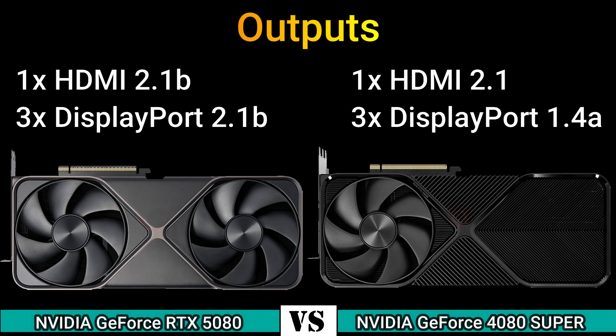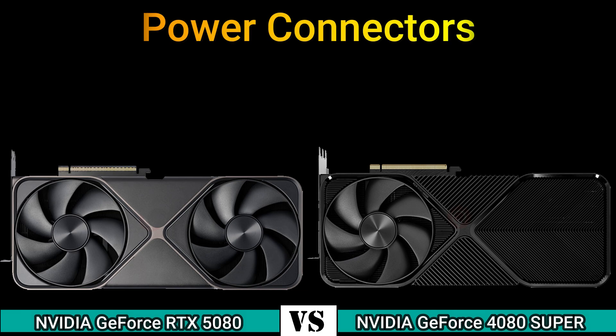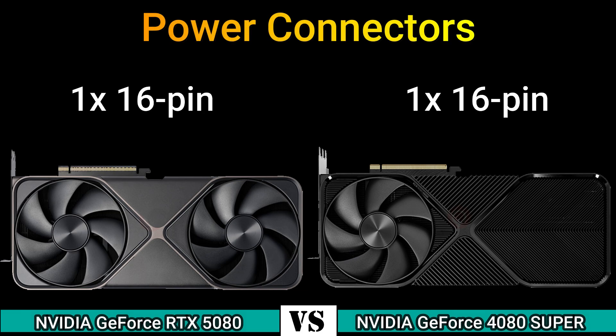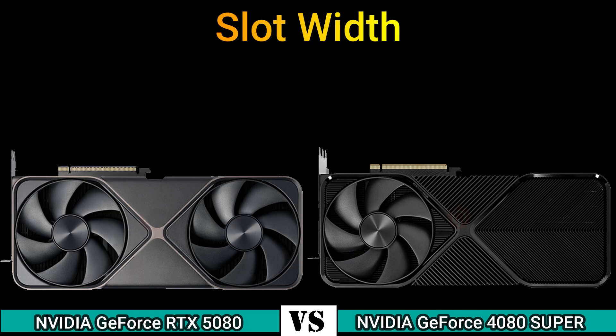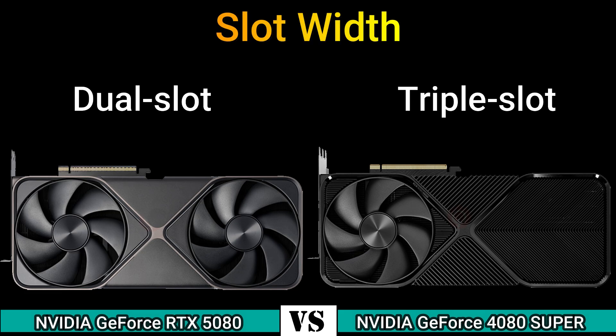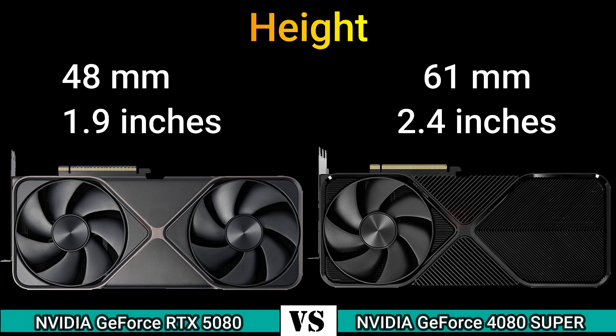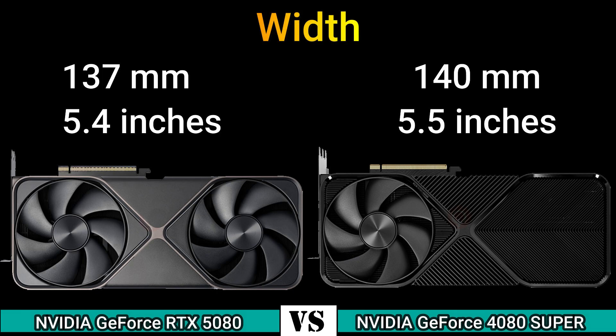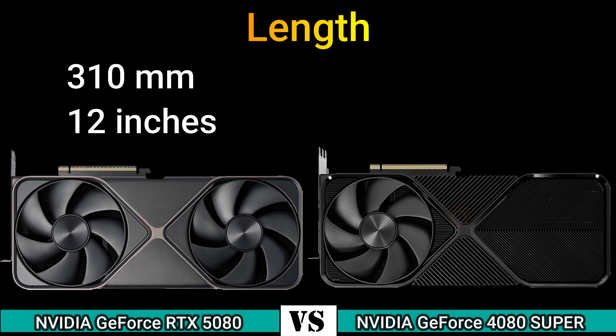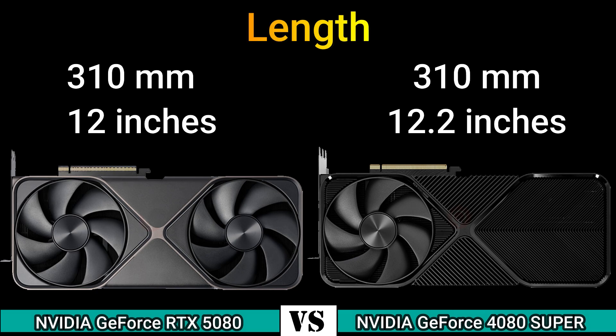Output: 1x HDMI 2.1b, 3x DisplayPort 2.1b and 1x HDMI 2.1b, 3x DisplayPort 1.4a. Power connector: 1x 16-pin. Slot: dual slot and triple slot. Height: 1.9 inch and 2.4 inch. Width: 5.4 inch and 5.5 inch. Length: 12 inch and 12.2 inch.